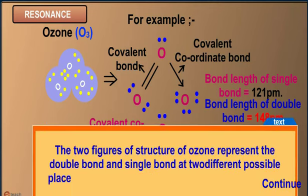The two figures of structure of ozone represent the double bond and single bond at two different possible places.